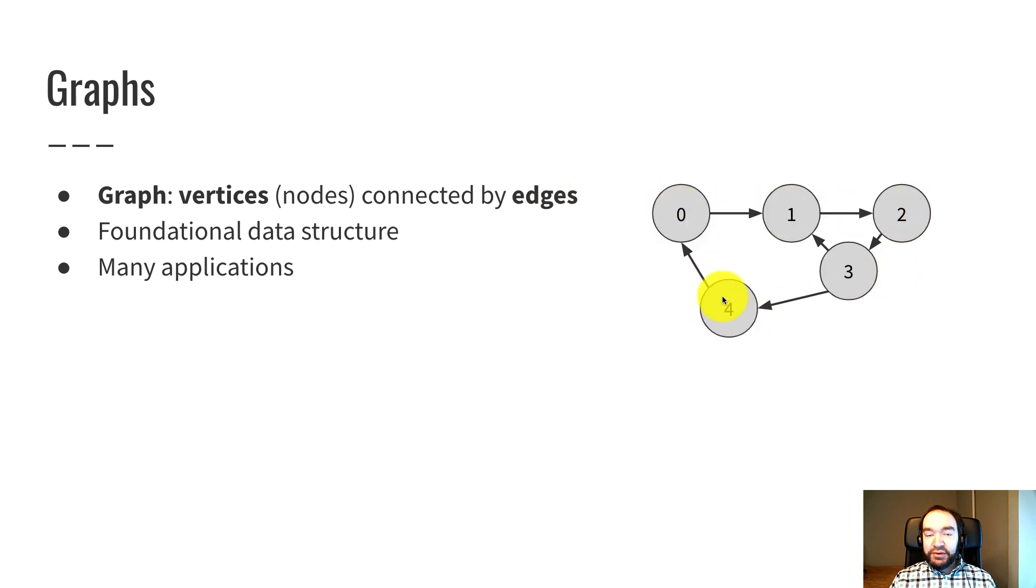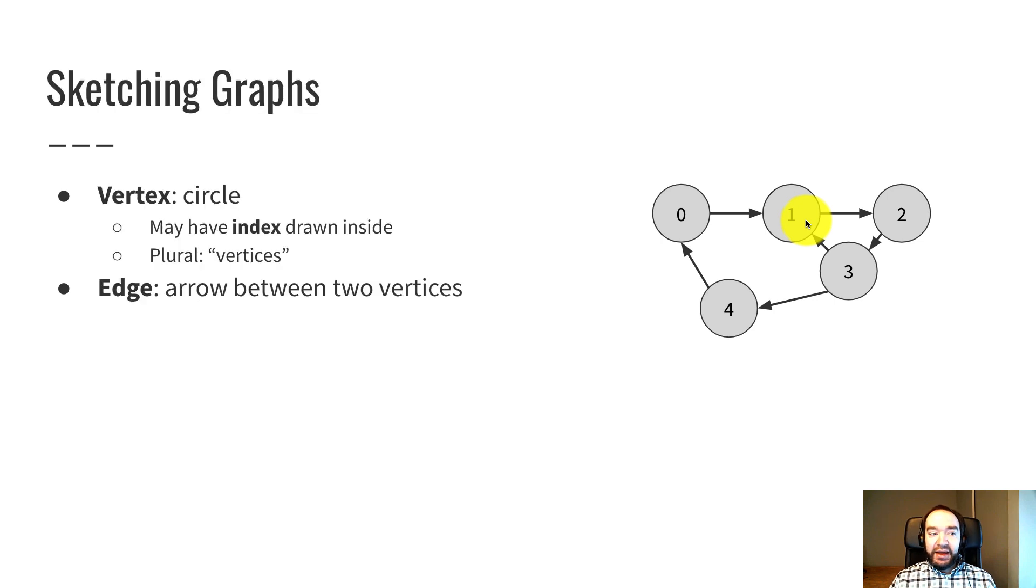Each edge represents a relationship between the two things. So this is a foundational data structure, and there are a whole lot of applications for this. Basically, any time we have things and relationships between two things, we can model that in software as a graph.